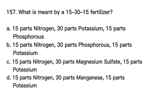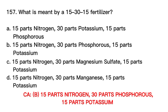Number 157. What is meant by a 15-30-15 fertilizer? A. 15 parts nitrogen, 30 parts potassium, 15 parts phosphorus. B. 15 parts nitrogen, 30 parts phosphorus, 15 parts potassium. C. 15 parts nitrogen, 30 parts magnesium sulfate, 15 parts potassium. D. 15 parts nitrogen, 30 parts manganese, 15 parts potassium. Correct answer is letter B: 15 parts nitrogen, 30 parts phosphorus, 15 parts potassium.